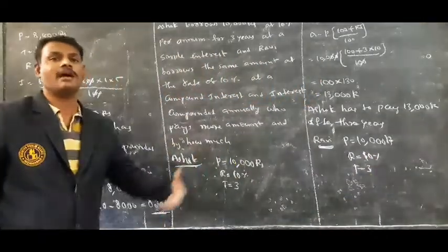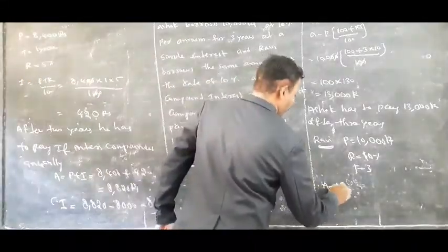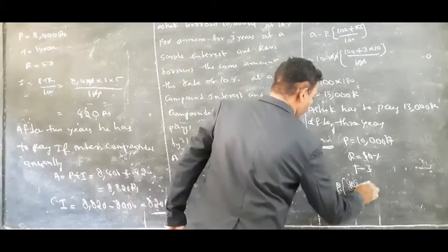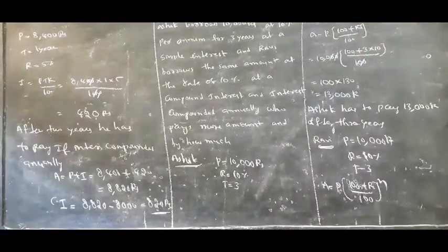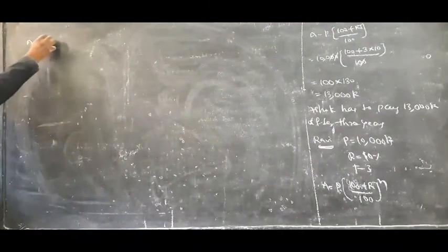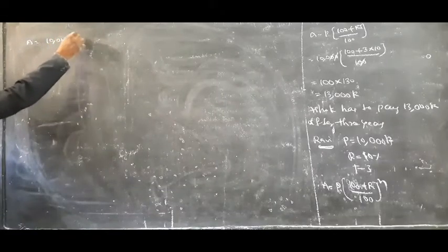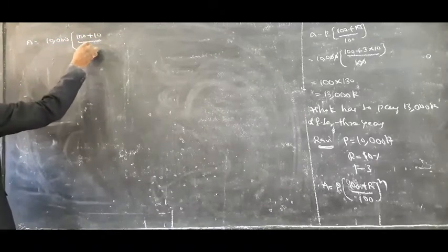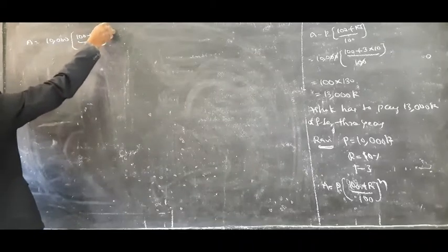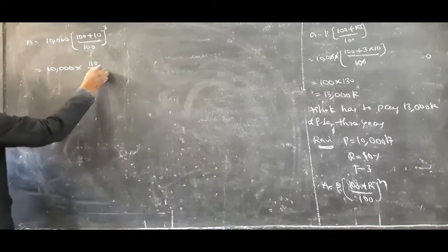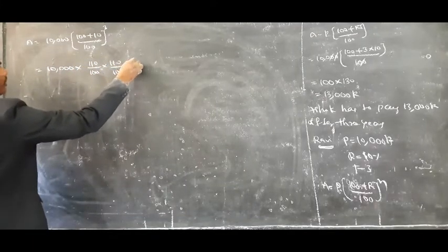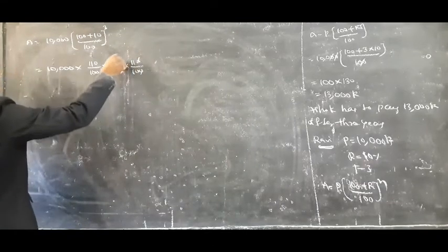So A is equal to P bracket 100 plus R by 100, whole power N. A is equal to 10,000 bracket 100 plus 10 by 100, whole power 3. It means 10,000 into 110 by 100 into 110 by 100 into 110 by 100. Zeros cancel.